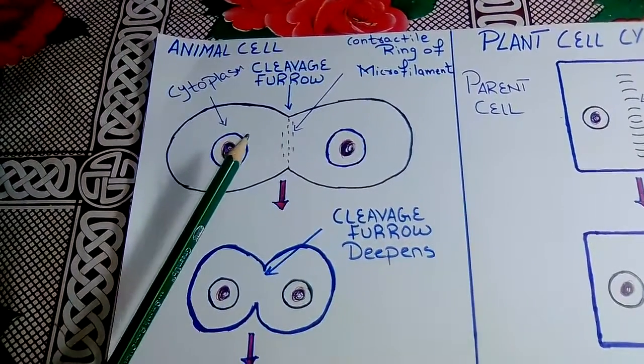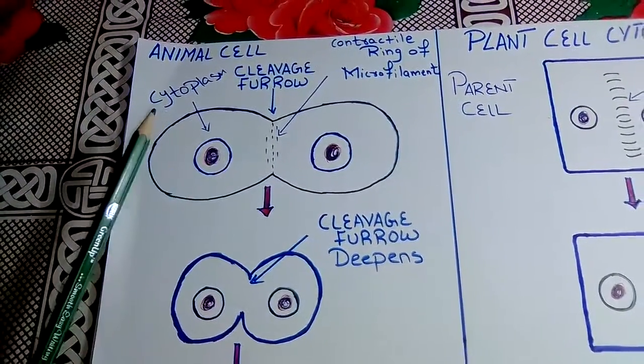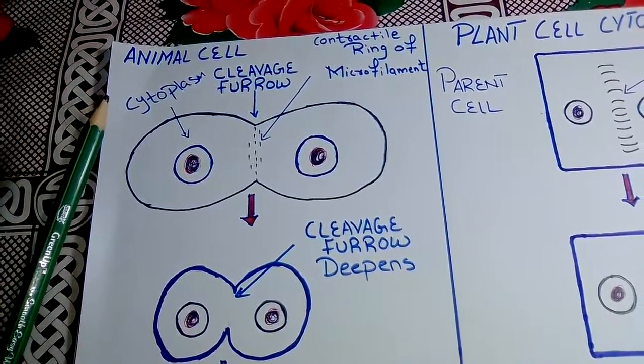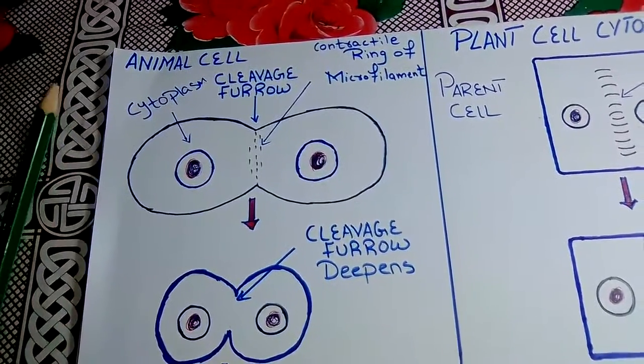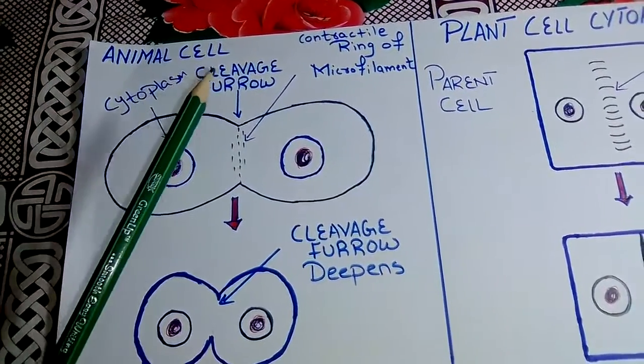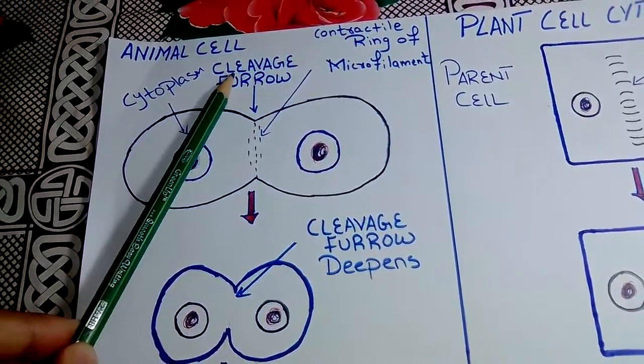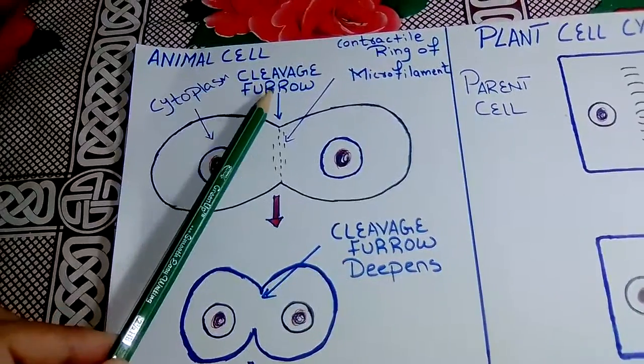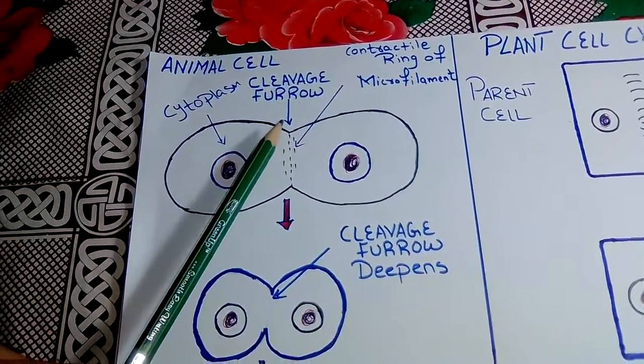So first of all, let's explain how cytokinesis occurs in animal cells. In animal cells, cytokinesis occurs by a process known as cleavage. A cleavage furrow develops where the metaphase plate used to be.